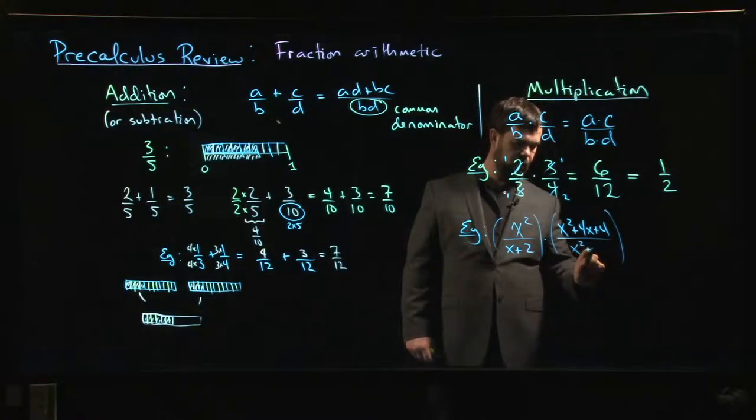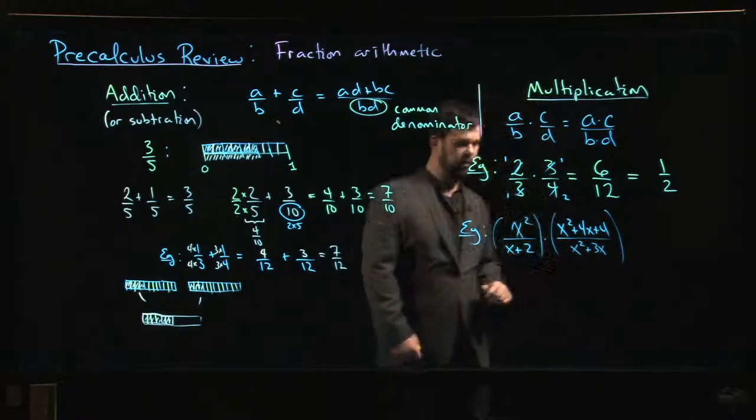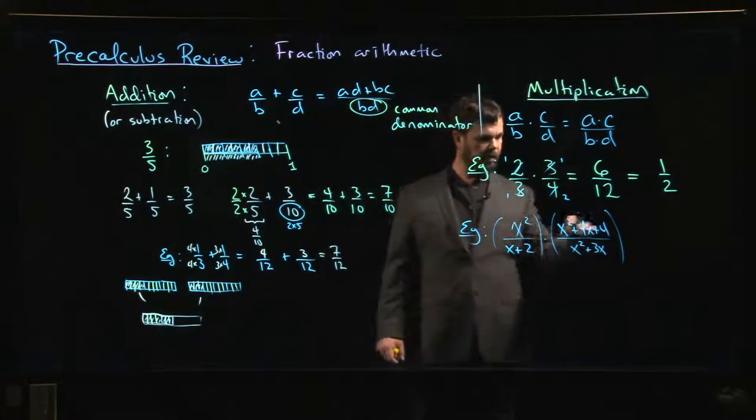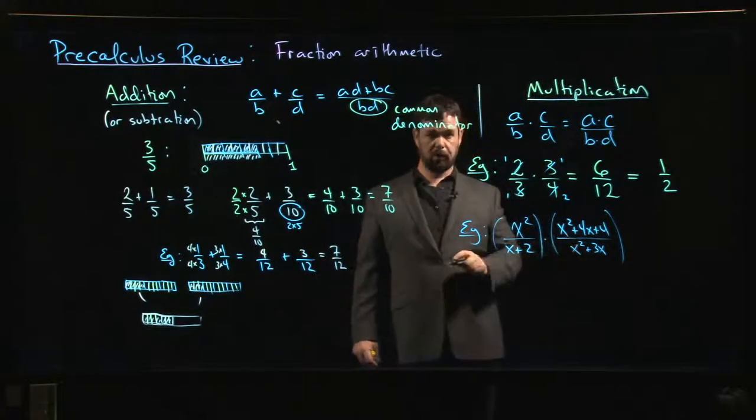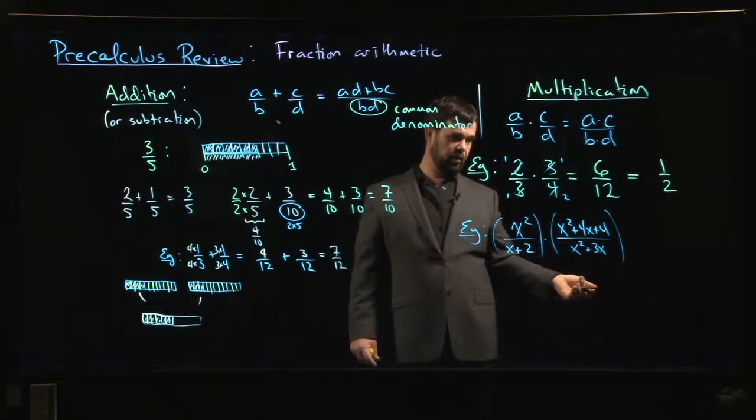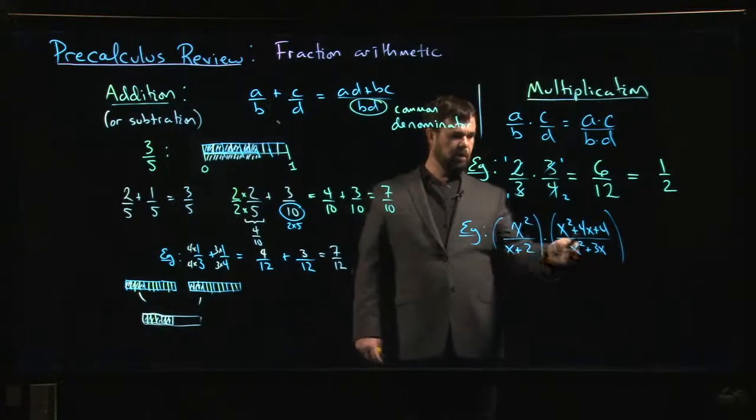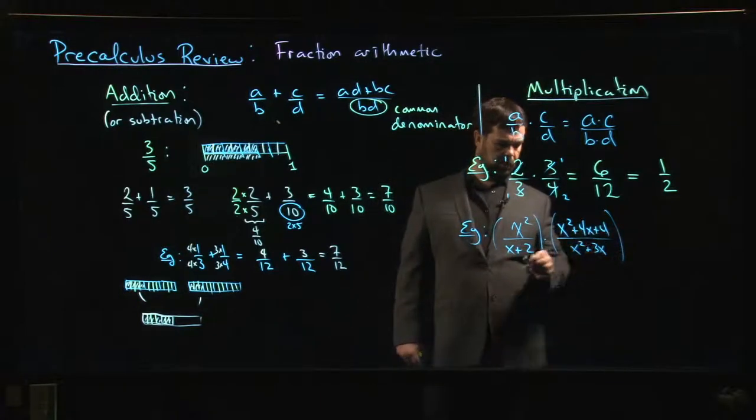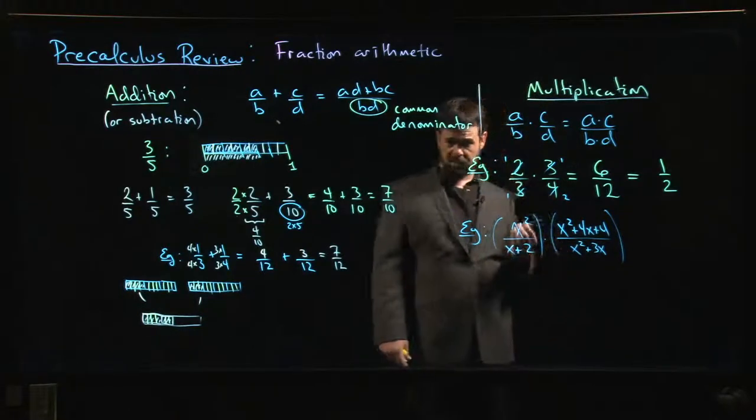You can multiply it all out if you want - multiply everything on the top by x squared, multiply those two binomials on the bottom, foil it out, then think about simplifying. But once you've multiplied those things out, once you've got this degree 4 polynomial up top and degree 3 on the bottom, it's going to be hard to see how to simplify.